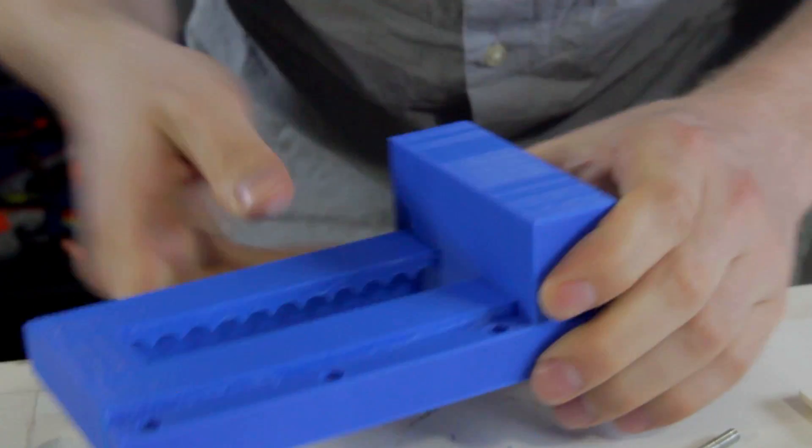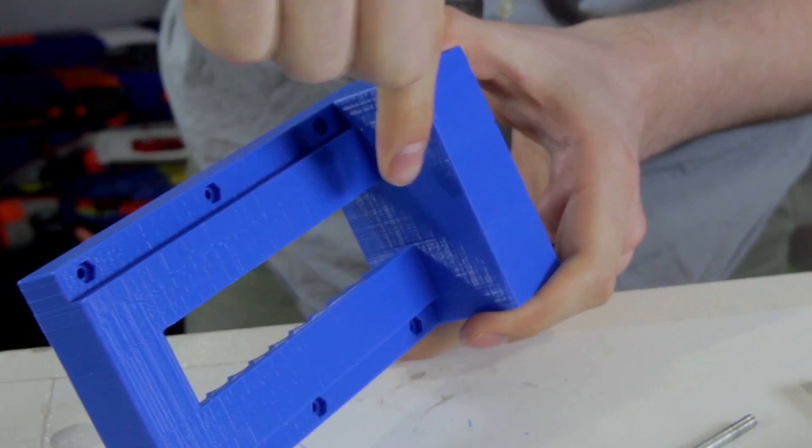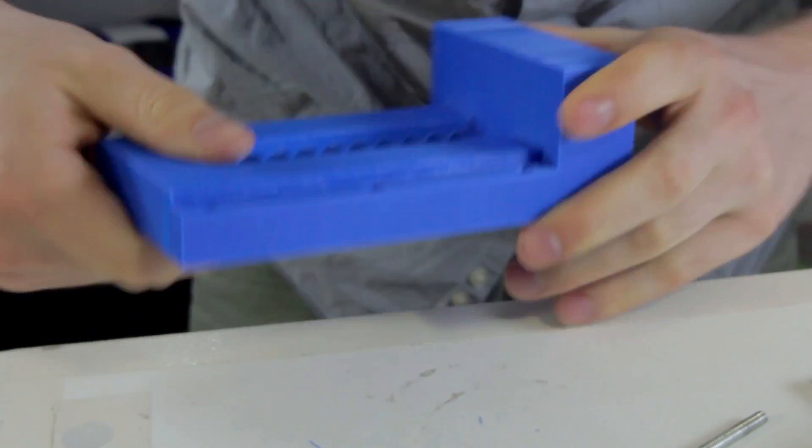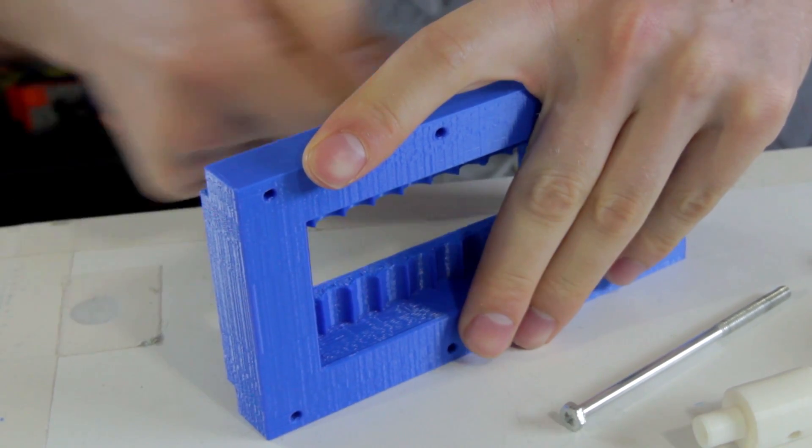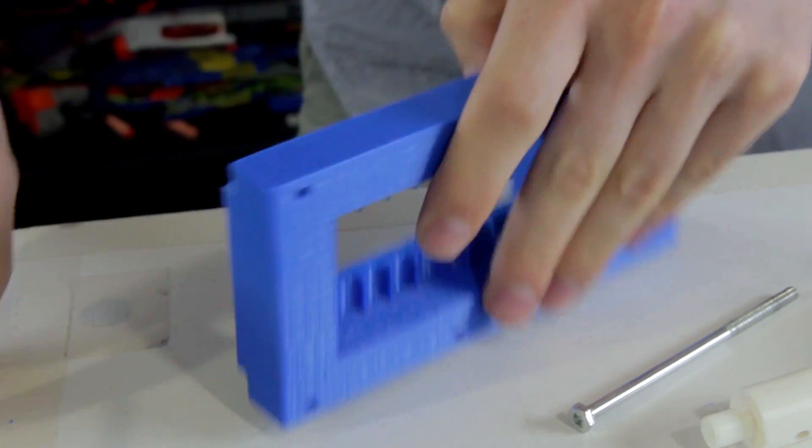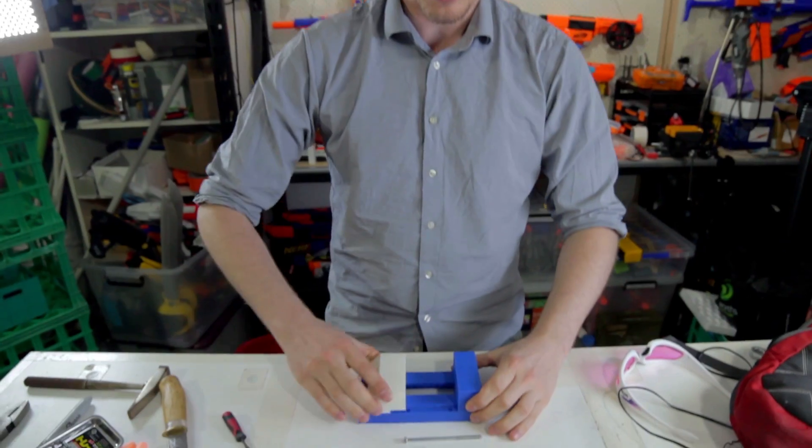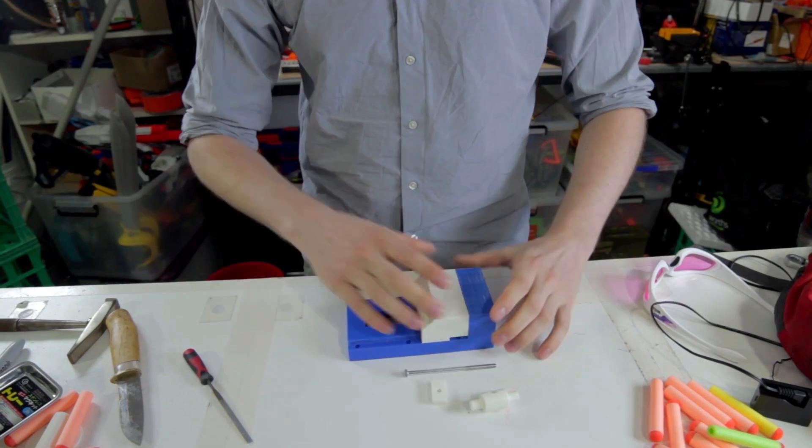Cura decided that the first layer of this overhang was going to be printed lengthways which just made it sag heaps. So it's got not the greatest finish on the side which is a shame. And now this slides relatively smoothly.